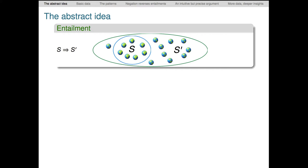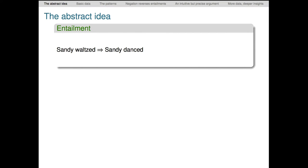At a more human level, the basic idea is that s entails s prime holds just in case committing to the truth of s just is committing to the truth of s prime. For example, if someone commits to the claim that Sandy waltzed, then they are also committed to the claim that Sandy danced. Every world in which Sandy waltzed is one in which Sandy danced.